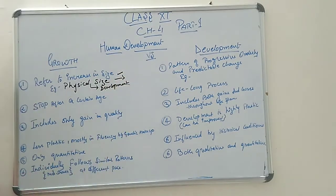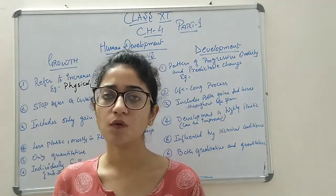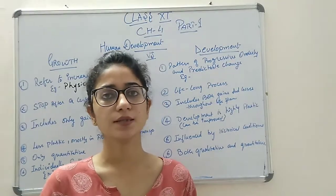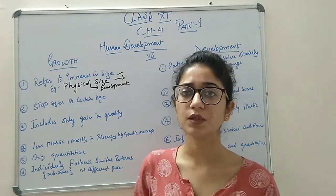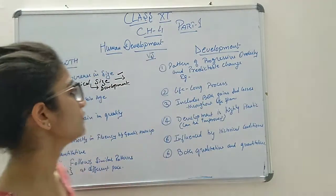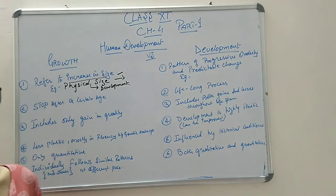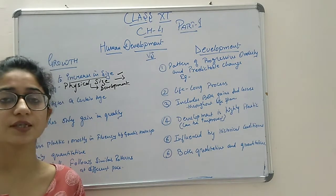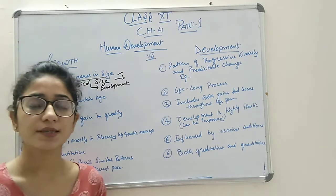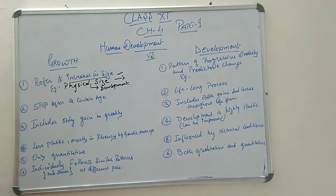At a particular age group, your height increases; your body parts get differentiated and changes occur according to the maturity level — all of that is related with growth. So the increase in size, which is related with physical development — your nails, your hair — all things related to physical changes are considered growth.